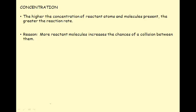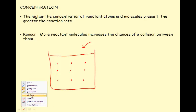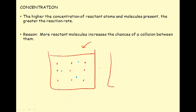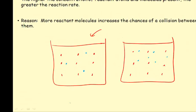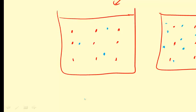With concentration, the higher the concentration of the reactant atoms and molecules present, the greater the reaction rate. This is because more reactant molecules increase the chances of a collision between them. If we have many particles and add a second material that will react with it, we get a fairly fast rate of reaction. If we add more of the second type of material, the rate of reaction will be faster because particles will be colliding more frequently.